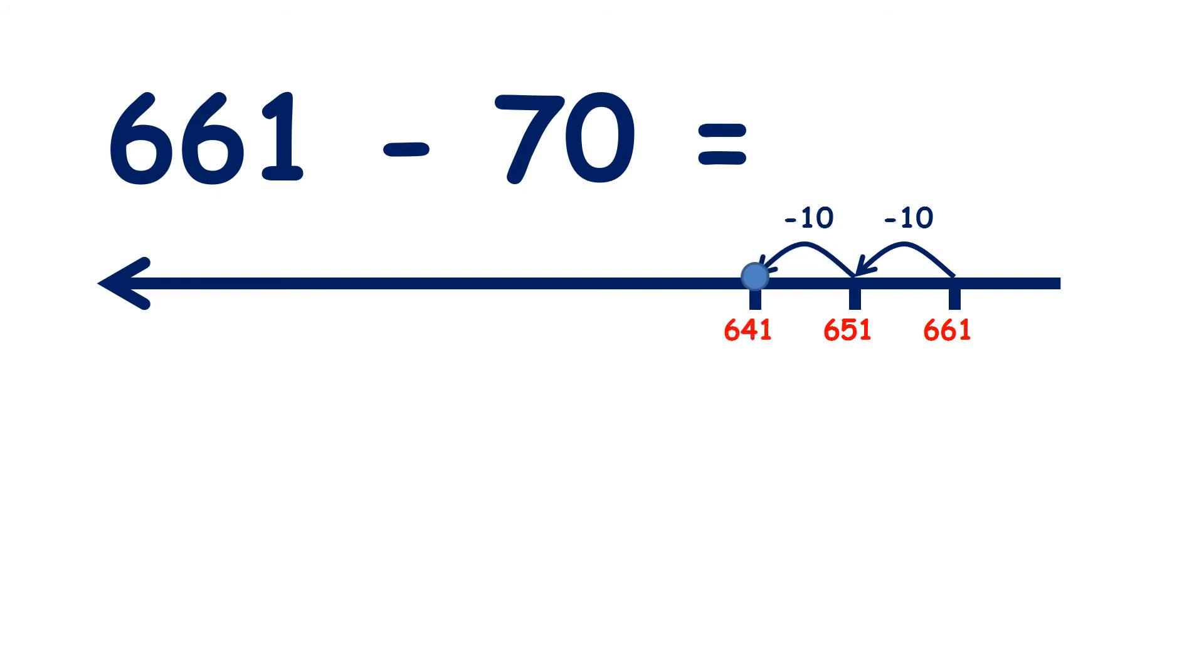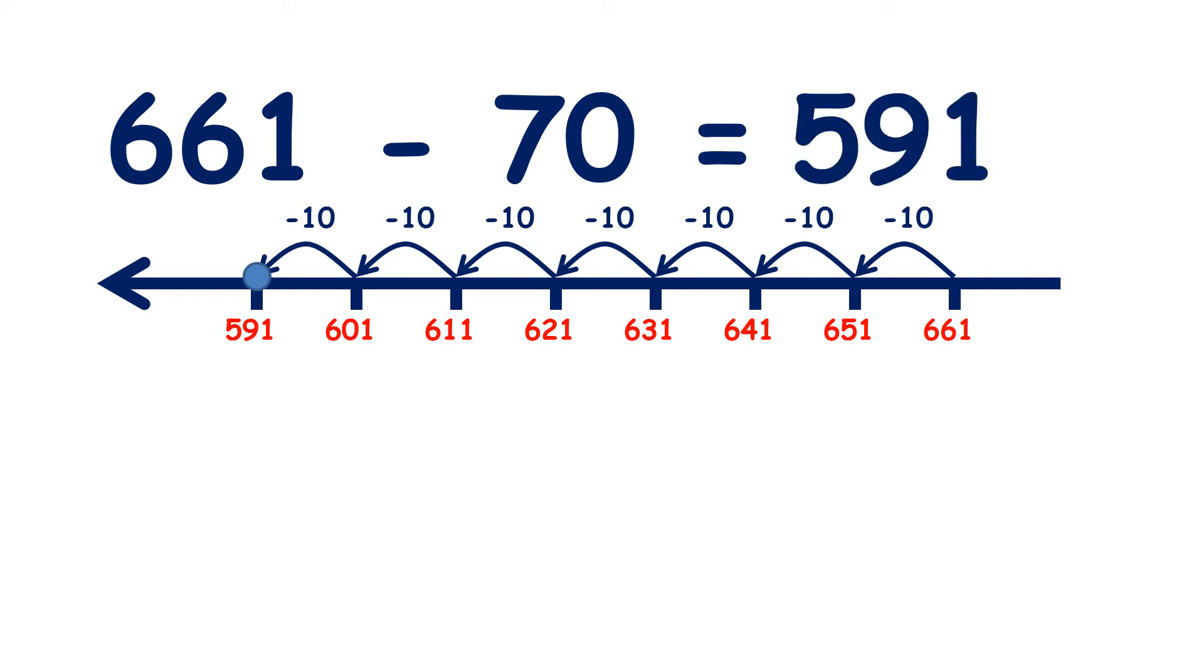651, 641, 631, 621, 611, 601, and 591. So now we've subtracted seven tens, we have our answer, 591.